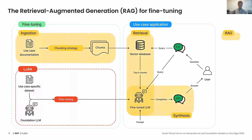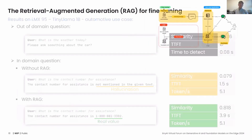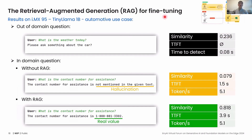Our second fine-tuning strategy is retrieval augmented generation, RAG. The idea is to give the model more context by creating a context database from use case documentation, so that our model receives not only the user query but also the best elements of context to give a better answer. For an automotive use case, we can also add data about common knowledge to detect whether a question is within or outside our domain. If we ask 'what is the weather today,' we quickly detect the question is outside our domain, bypass the LLM, and give a predefined answer — that's why the time to first token is essentially zero.